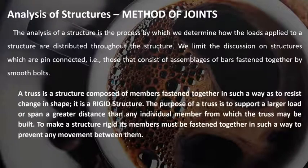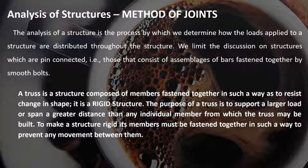A truss, which is usually analyzed using the method of joints, is a structure composed of members fastened together in such a way as to resist changes in shape. It is a rigid structure. The purpose of a truss is to support a larger load or span a greater distance than any individual member from which the truss may be built.